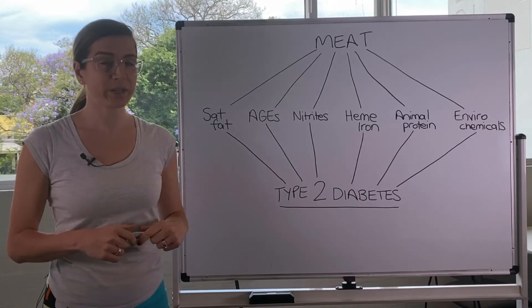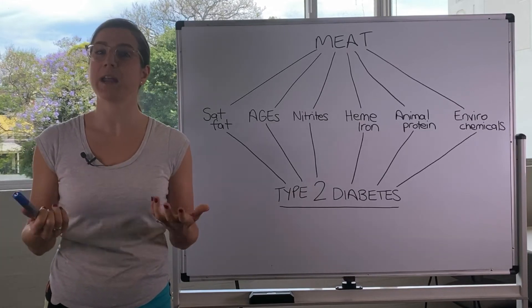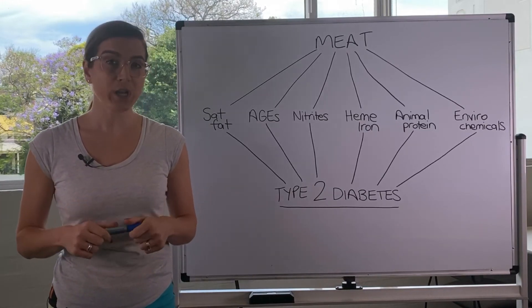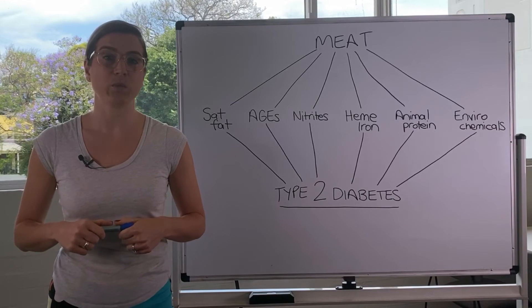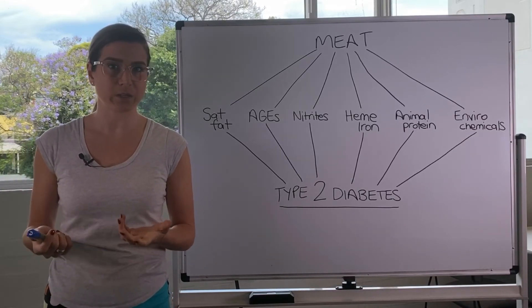So the next one is heme iron. Heme iron is a type of iron we get from animal products, whereas non-heme iron is a type of iron we get from plant-based sources like your dark green leafy vegetables for example.